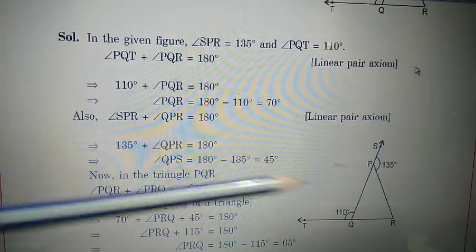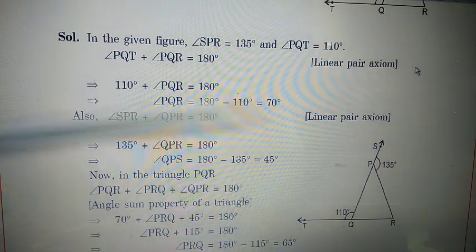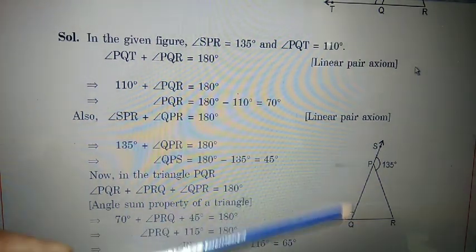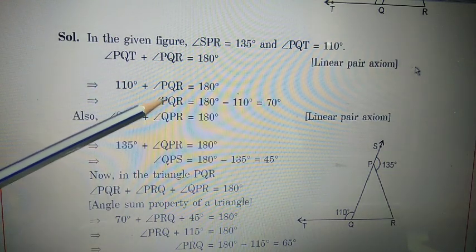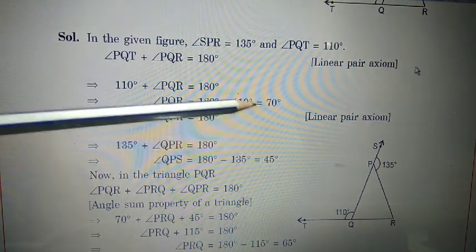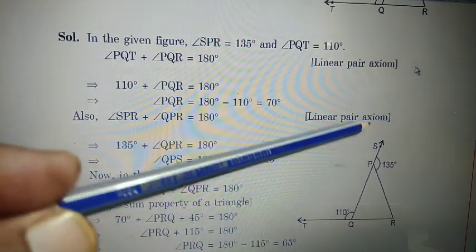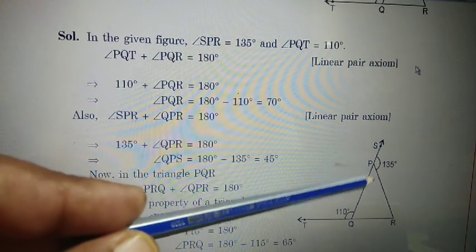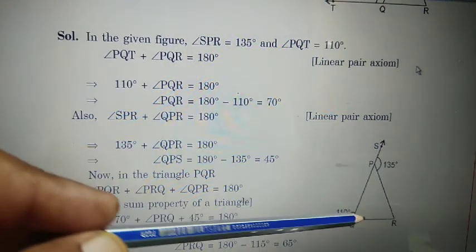Angle PQT and angle PQR form a linear pair, so their sum is 180 degrees. PQT is 110, so PQR equals 180 minus 110 equals 70 degrees. Similarly, angle SPR and angle QPR are a linear pair summing to 180 degrees. So angle QPR equals 180 minus 135 equals 45 degrees.